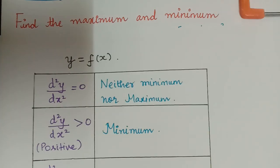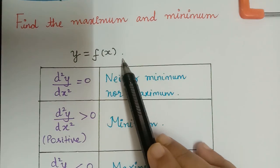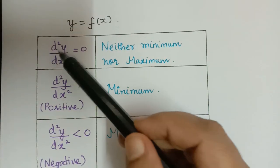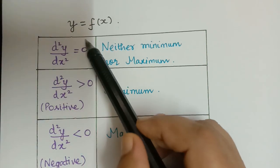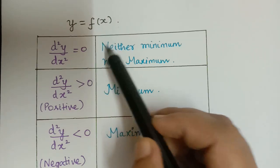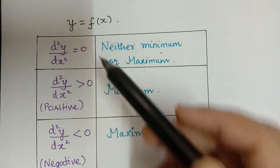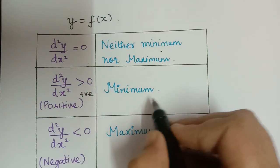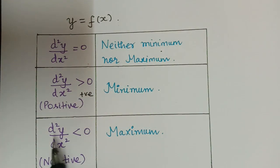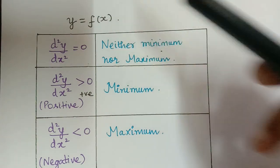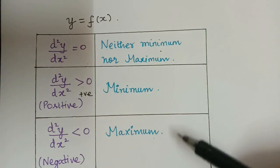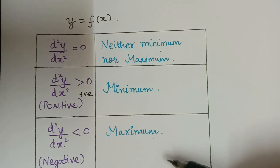First we should know this concept. For a function y = f(x), when we take d²y/dx² and that value equals 0 at a point, the function is neither minimum nor maximum at that point. If that value is greater than 0, the function is minimum at that point. This is the concept of maxima and minima, which we shall now use to find the maximum and minimum value of the given function.